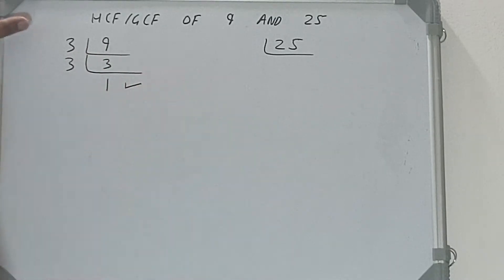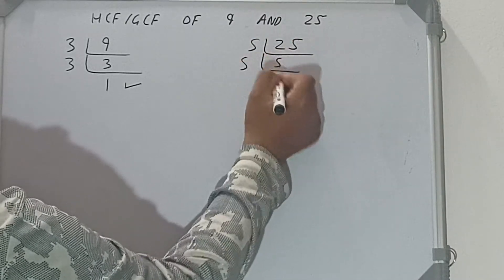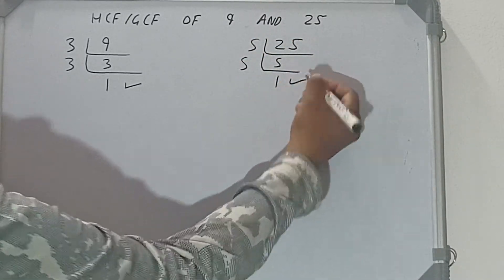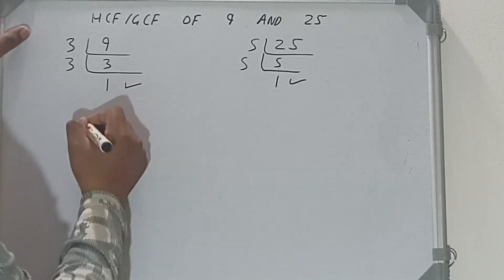Same we need to do with the number 25. Is 25 divisible by the lowest prime number 2? No it is not. So we'll check with the next lowest one, that is 3. Is 25 divisible by 3? It is not. So we'll check with the next lowest prime number, that is 5. Is 25 divisible by 5? Yes it is, we'll be having 5. 5 is again divisible by 5, we'll be having 1. Once we get 1, we are done with this.